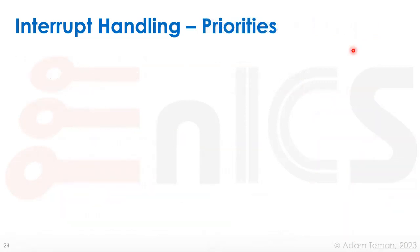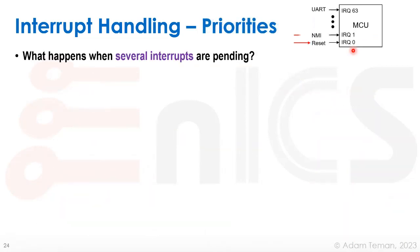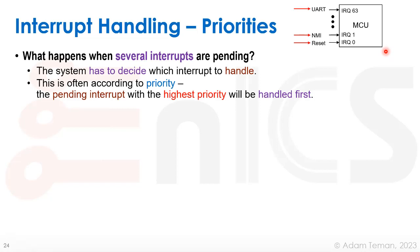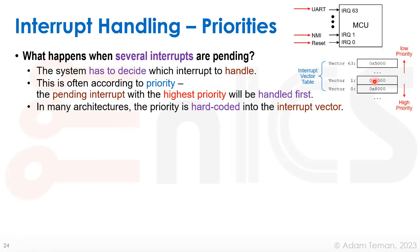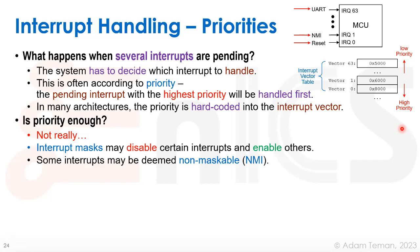Next: priorities. When several interrupts are pending simultaneously — reset, non-maskable interrupt, and others — the system must decide which to handle first. This is done by priority: the pending interrupt with the highest priority is handled first. In many architectures this is hard-coded to keep things fast. For example, with 64 interrupt vectors, vector 0 has the highest priority and vector 63 has the lowest. No priority lookup is needed — it's built in.